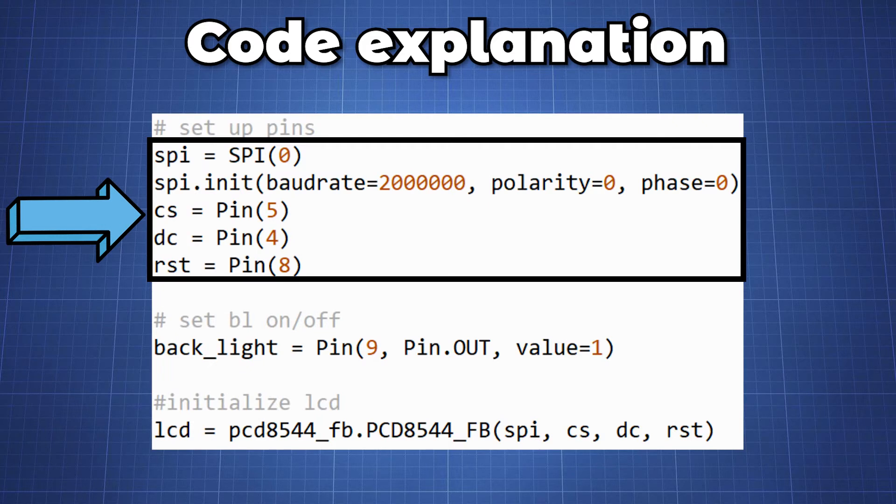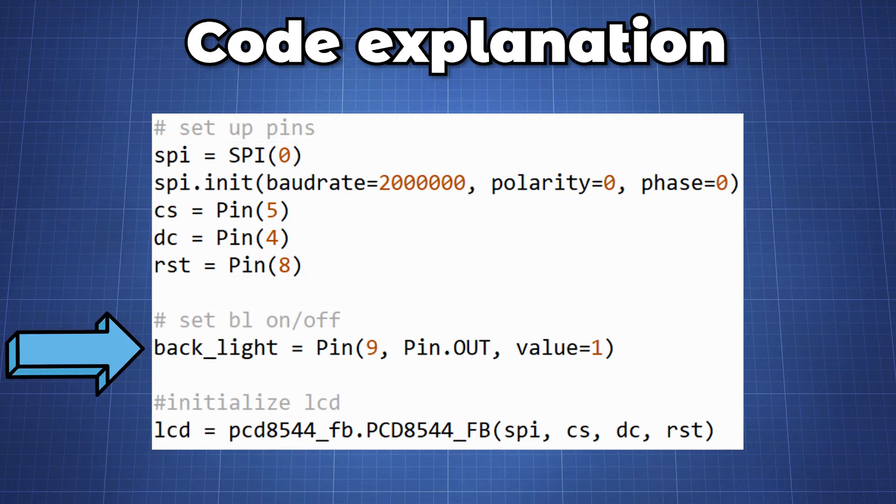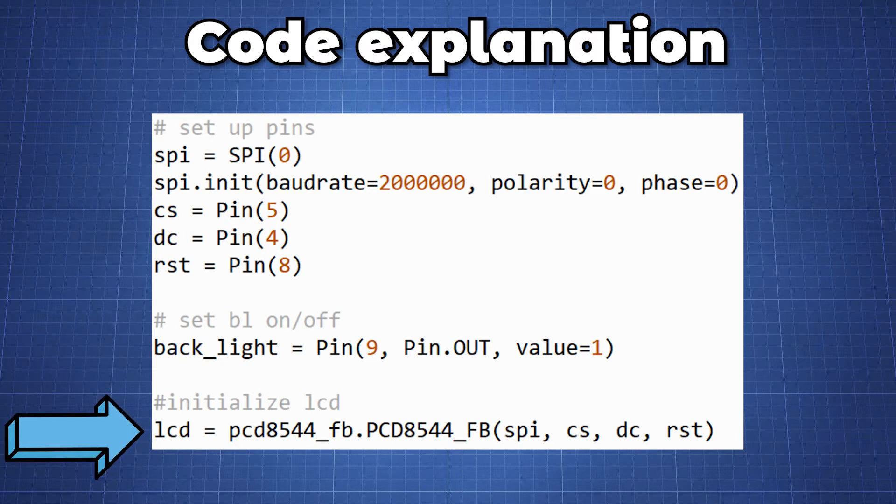In this block we set up all the pins according to our schematic and initialize the SPI communication. Here we create a variable called backlight which you can use to control the backlight to be either on or off. Then we can start to initialize our LCD using the library by setting it equal to the variable LCD.